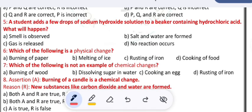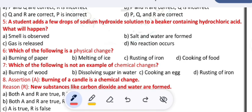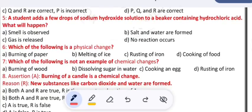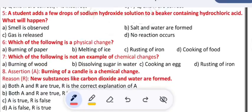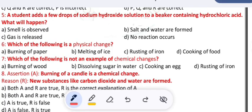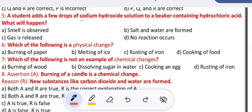A student adds few drops of sodium hydroxide solution to a beaker containing hydrochloric acid. What will happen? A) smell is observed, B) salt and water are formed, C) gas is released, D) no reaction occurs. Sodium hydroxide is a base and hydrochloric acid is an acid. When an acid reacts with a base we will get salt and water.